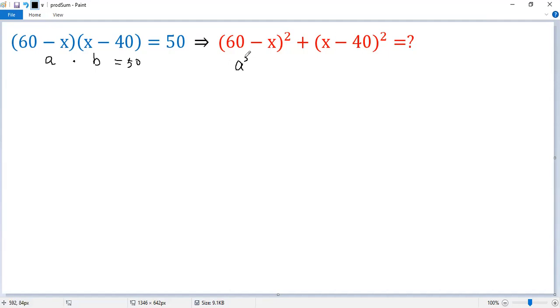And the target would be a squared plus b squared. We can apply the perfect square formula: a squared plus 2ab plus b squared equals (a plus b) squared.